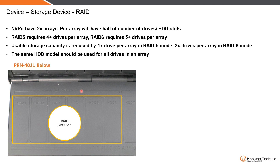If we enable RAID 6 with all the hard disks inside for RAID array 1, then the total storage is the sum of all the hard disks, but the usable storage after RAID 6 will be HDD 1, 2, 3, and 4. Two drives will be used for RAID parity.